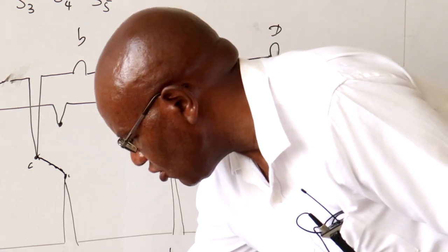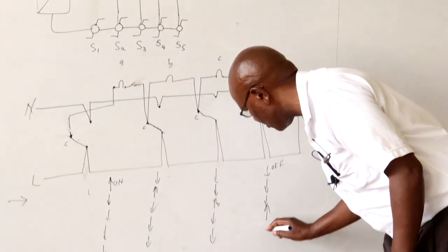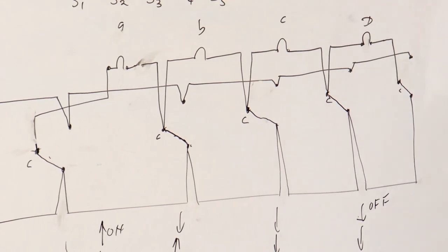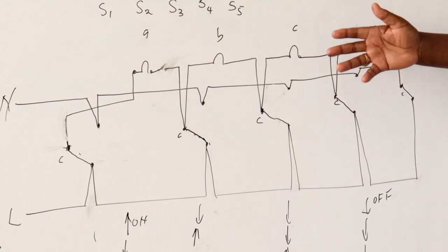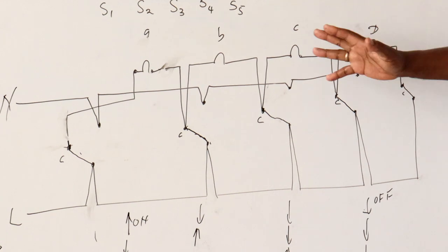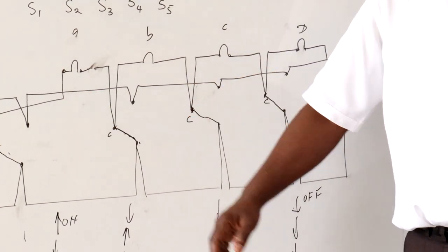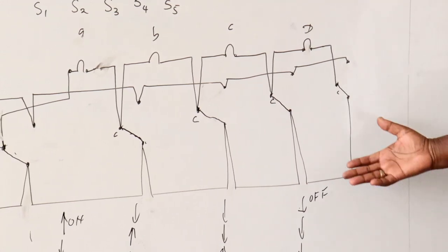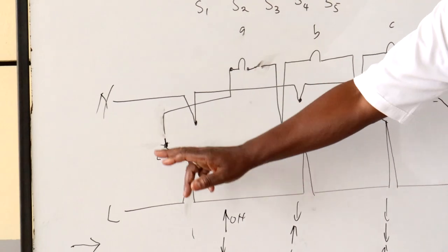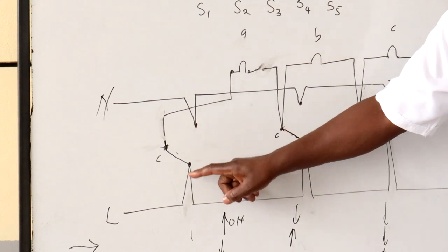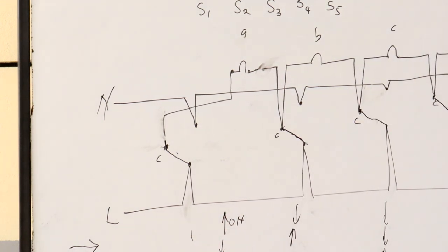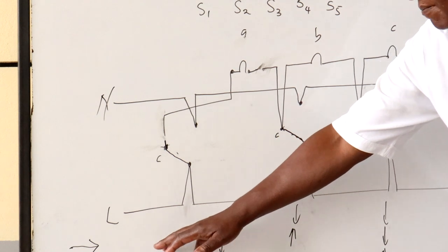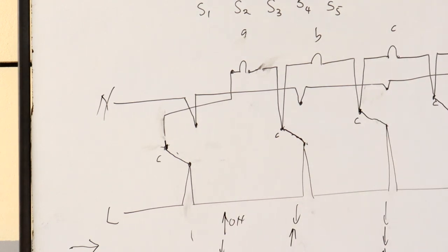So now all the lamps are off. Once I reach the top, I can switch all the lamps off. Then the same sequence follows in reverse when going back down — once I flip that switch, lamp D comes on and the rest are off, then I can go all the way down. Similarly, when somebody else wants to follow me up, they come to the first switching position, flip it to that position, and a path is available for that lamp to come on.